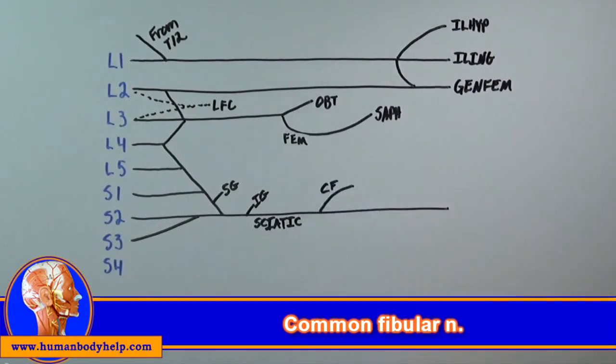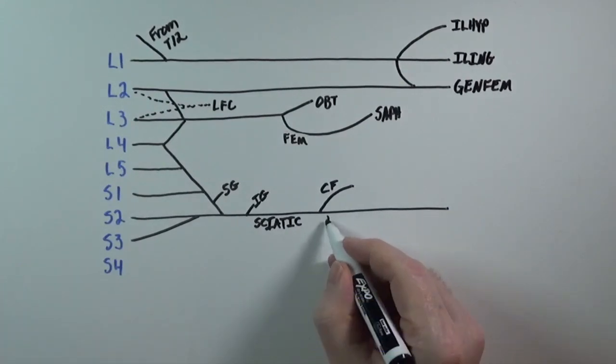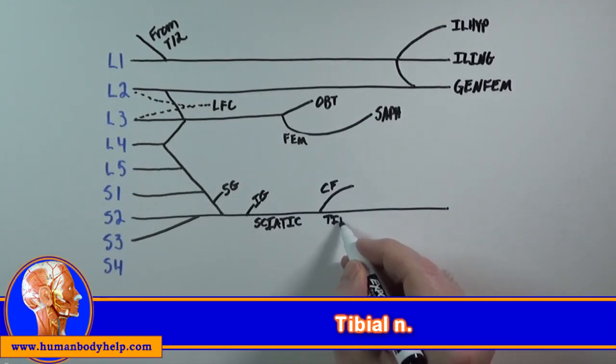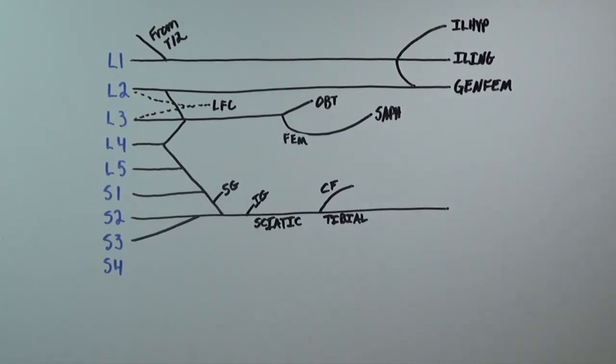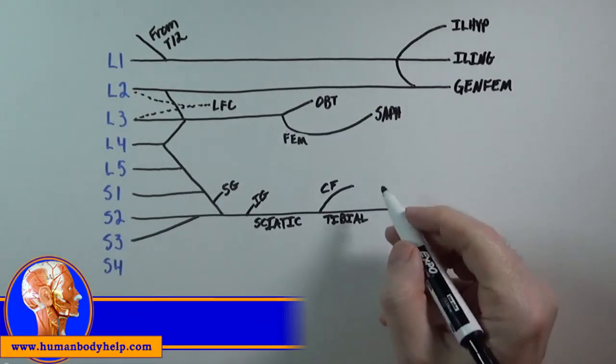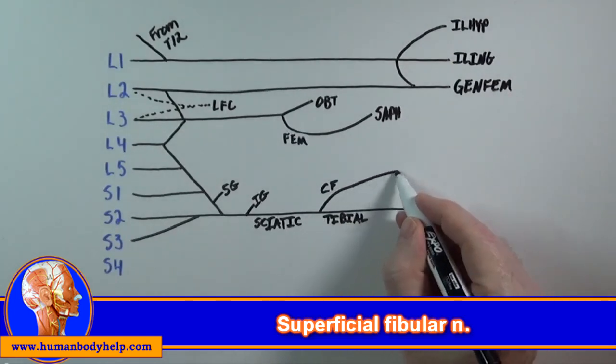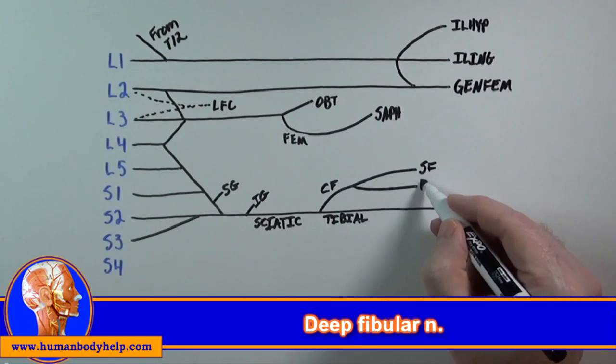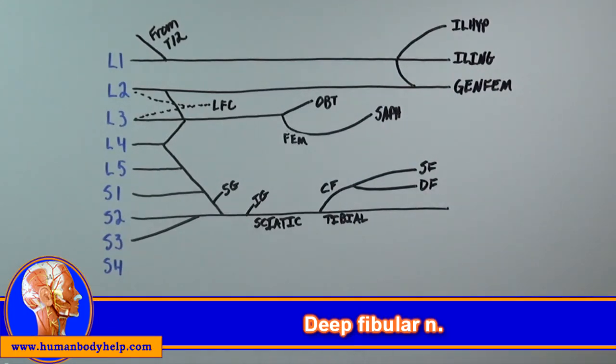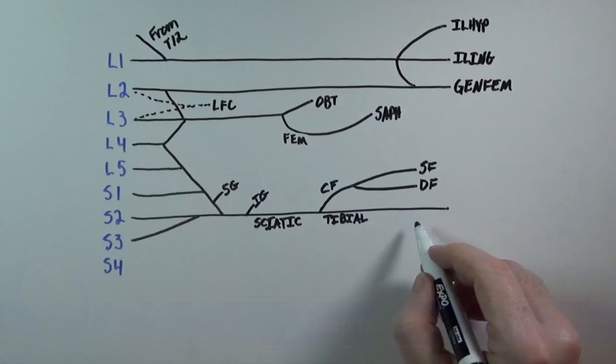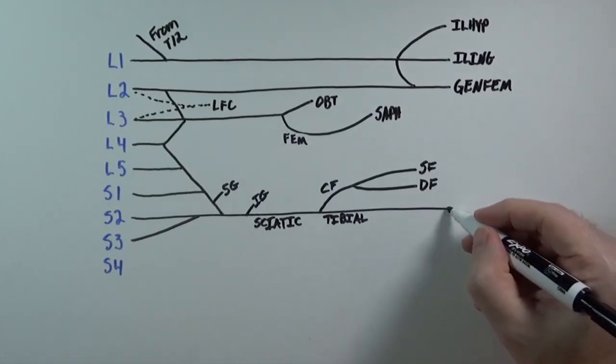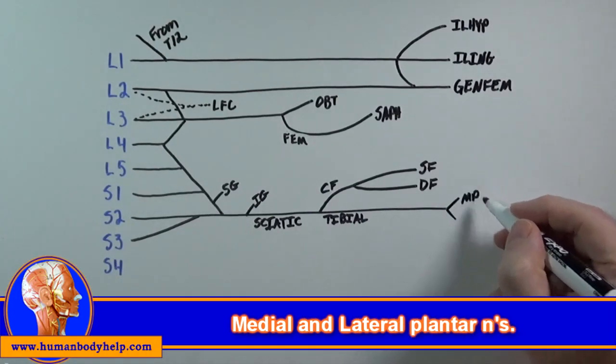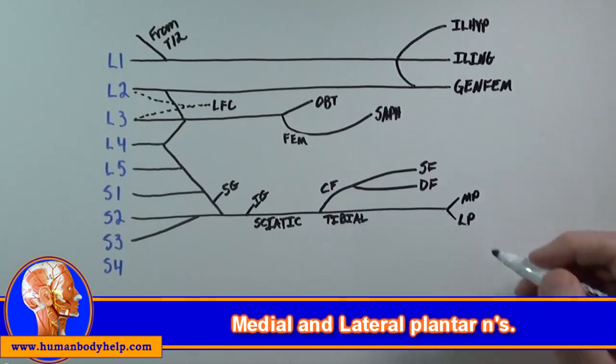The sciatic nerve will then branch into the common fibular nerve, and then the tibial nerve, which runs down the back of the leg to supply the posterior compartment muscles. Now after the common fibular nerve wraps around the neck of the fibula, it branches into the superficial fibular nerve, which supplies the muscles of the lateral compartment, and the deep fibular nerve, which supplies the muscles of the anterior compartment. Now this tibial nerve runs down the back of the leg, posterior to the medial malleolus, and goes into the foot and branches into the medial plantar nerve and the lateral plantar nerve.